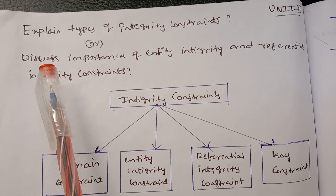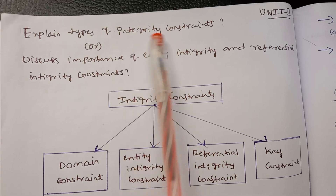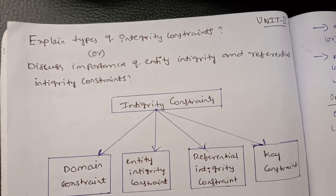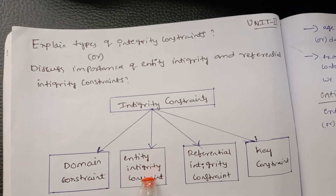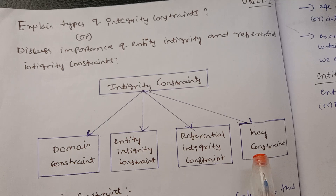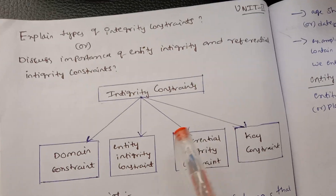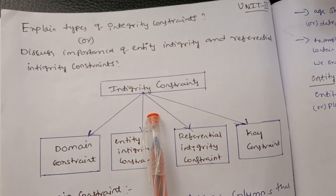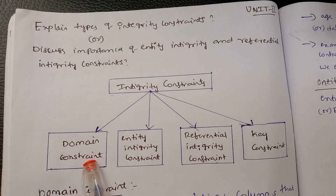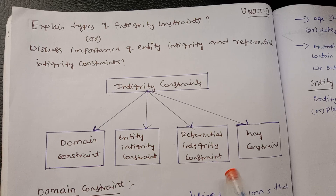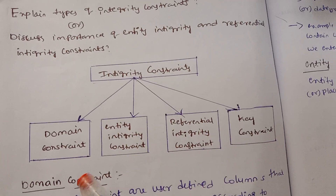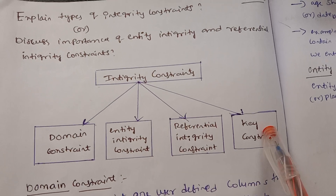If questions are asked about Integrity Constraints, you will be asked about the types. There are 4 types of Integrity Constraints: domain constraint, entity integrity constraint, referential integrity constraint, and key constraints.